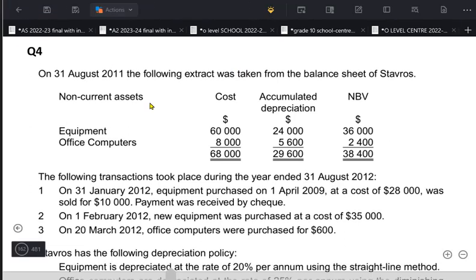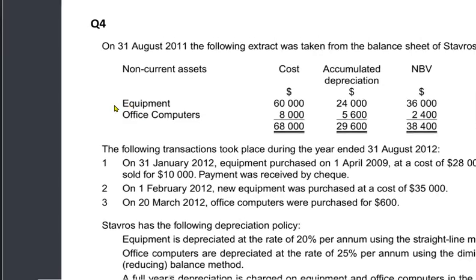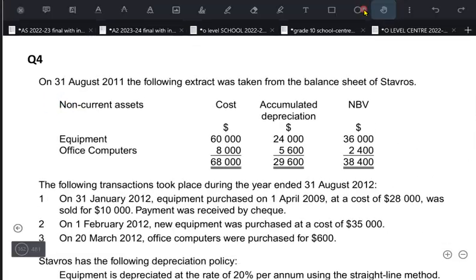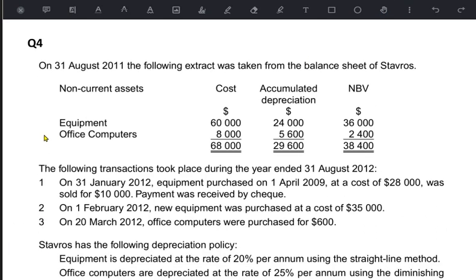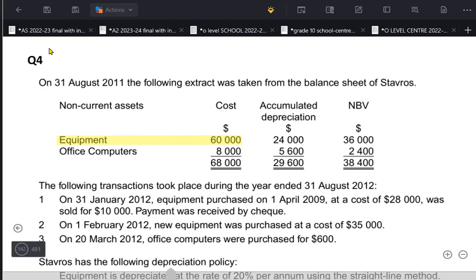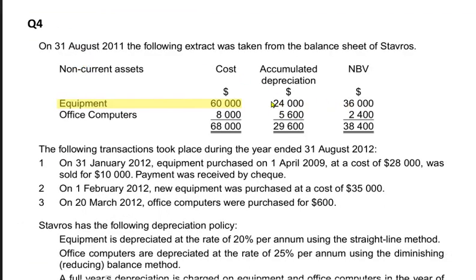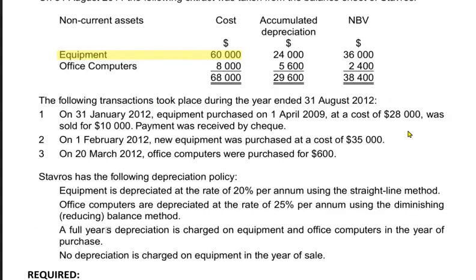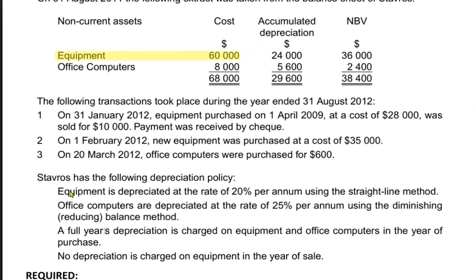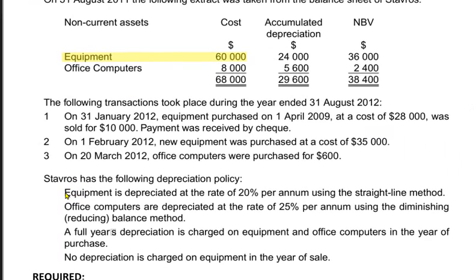First of all, we have equipment worth 60,000. There are three columns in this balance sheet extract: the first column is the cost of the non-current asset, the second is accumulated depreciation — which is the total depreciation till date — and the NBV is the difference between the two. If we deduct accumulated depreciation from the cost of the asset, we are left with the remaining value, that is net book value. The depreciation for equipment is 20% using straight line.